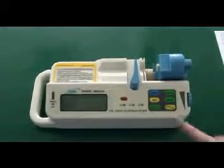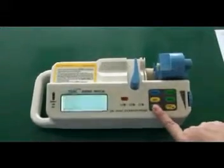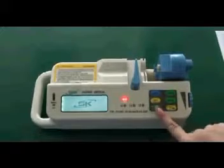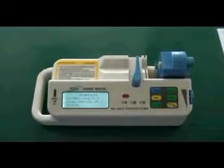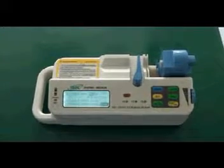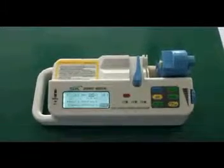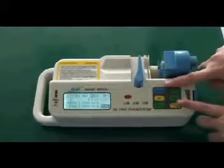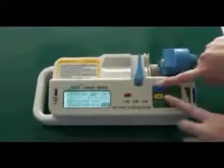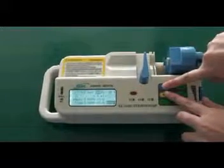Step 4. Press power key to start the syringe pump. Secondly, press clear and set keys together to enter into the interface of parameter setting.